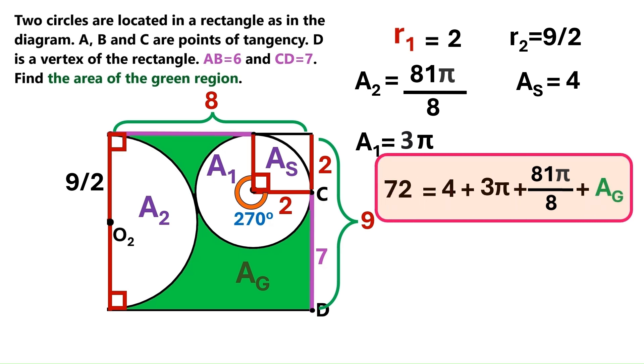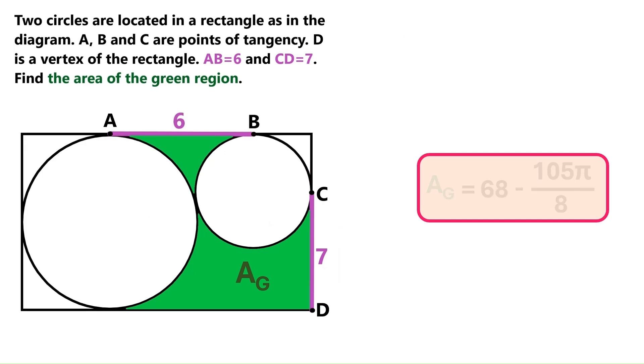Now, we need to do some math to find the green area, but I did it all for you, and I've got 68 minus 105 pi over 8. Very ugly number, right? But that's the answer to our problem.